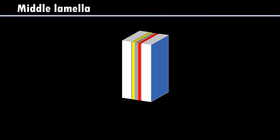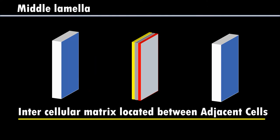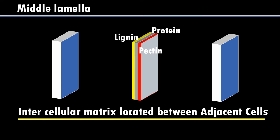Middle lamella is situated between the intercellular matrix, located between the adjacent cells. If you consider these as the two cells, middle lamella is present between these two cells, and it is made up of different types of pectins, proteins, or lignins. These are the chemical constituents found in the middle lamella.